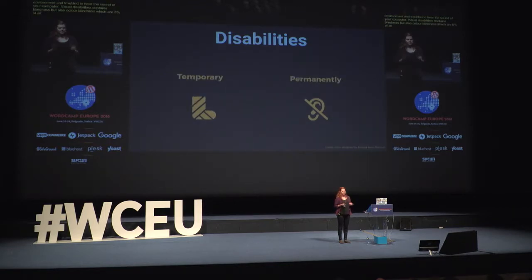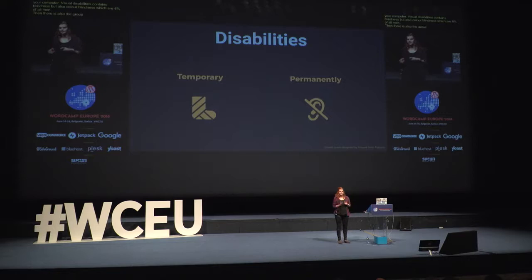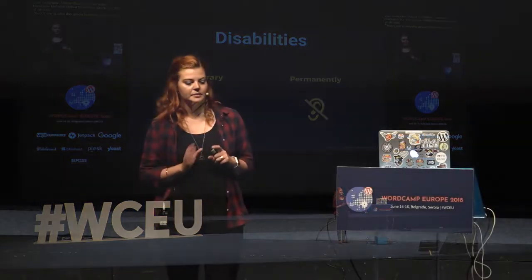There is also the group between temporary disabilities and permanent disabilities. Permanent disabilities are things like color blindness, where you have it permanently. Temporary disabilities can be like a broken arm, or using a screen in really bright sunlight and struggling to see it, or eating in front of a computer, which we all do sometimes.